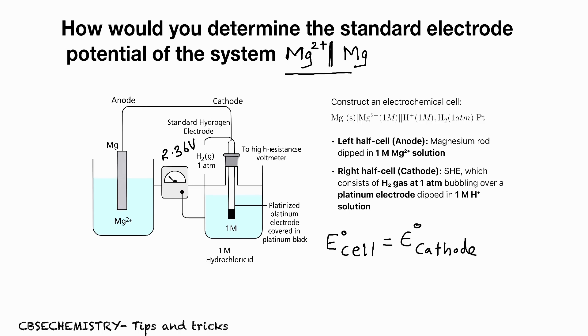And you already know E°cell equals E°cathode minus E°anode. Now, what is the reading? 2.36. We know the cathode is SHE. For SHE, what is the standard electrode potential value? It is 0 minus E°anode. What is anode? It is Mg²⁺/Mg.